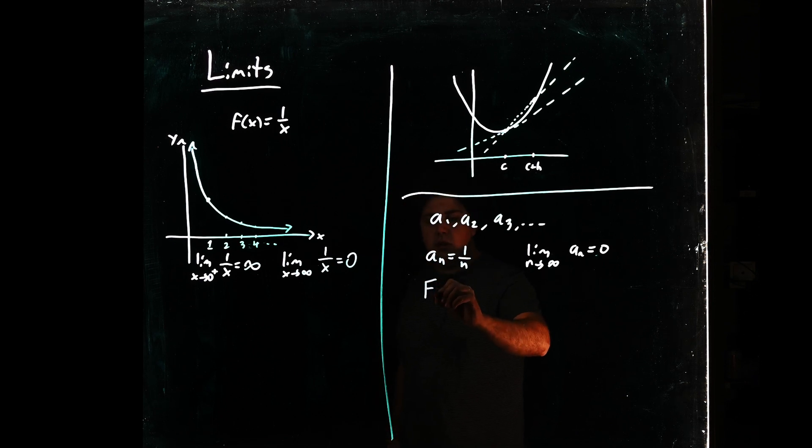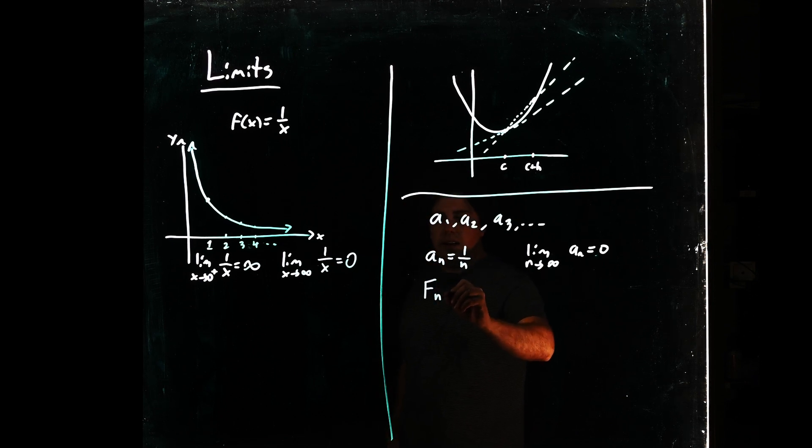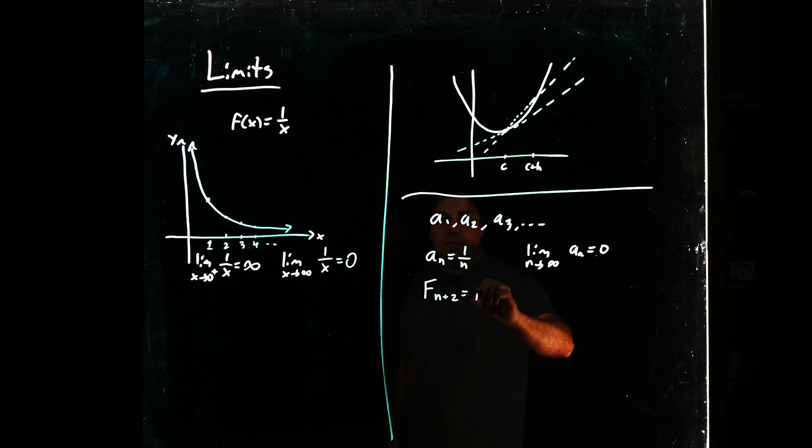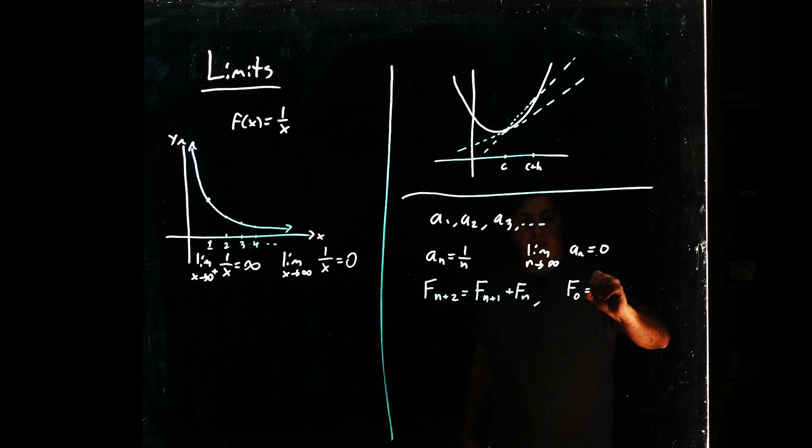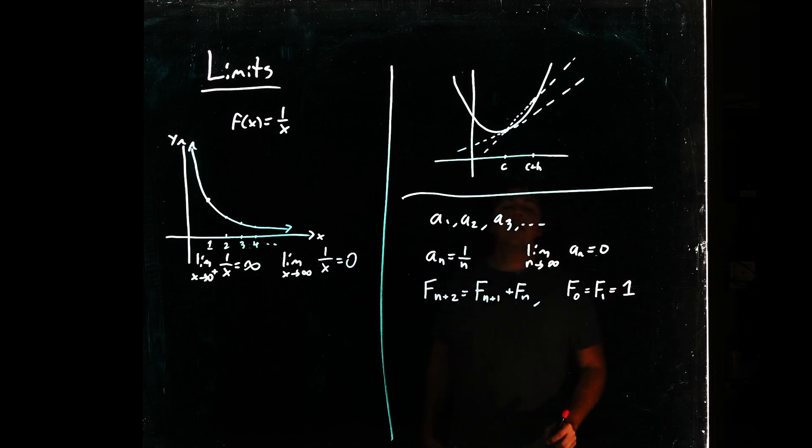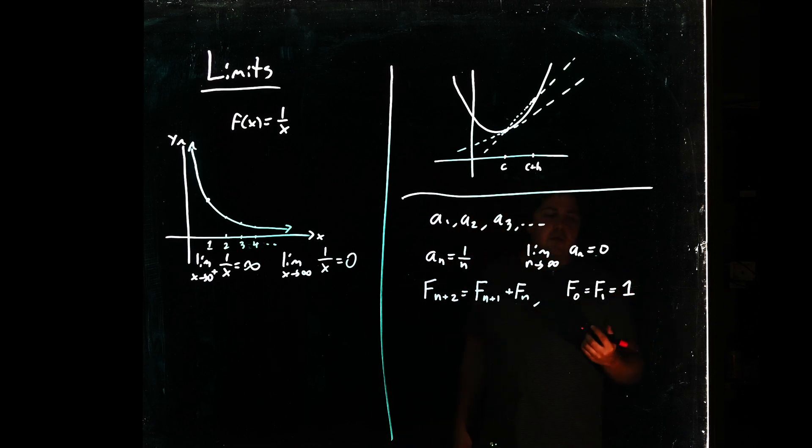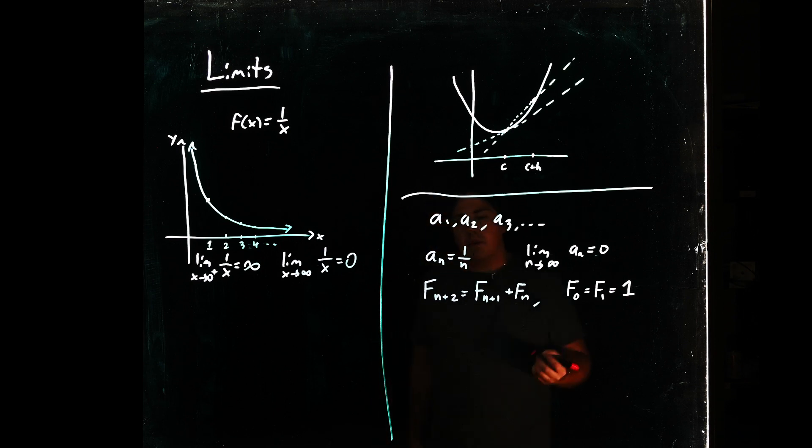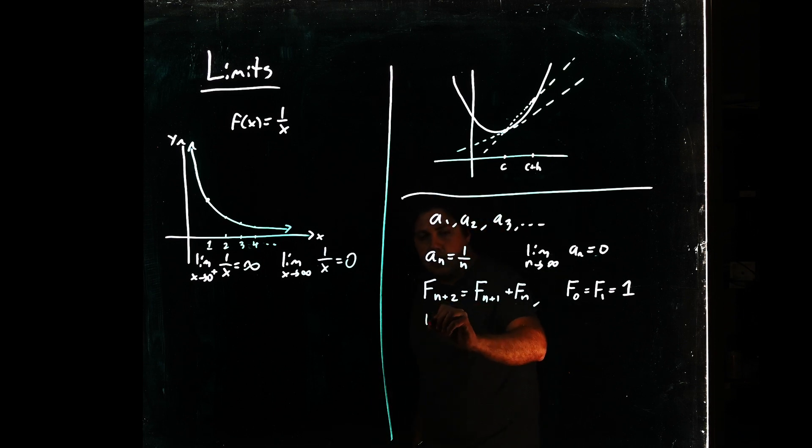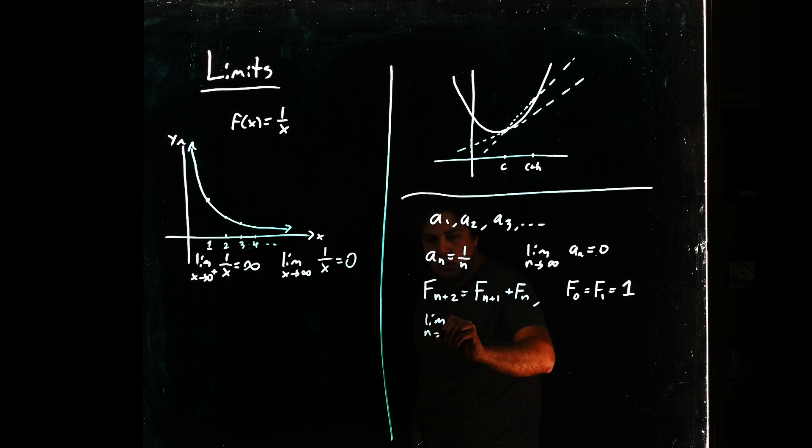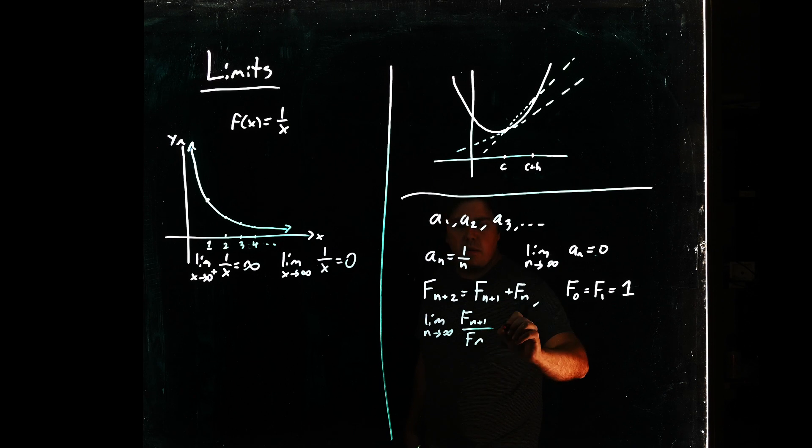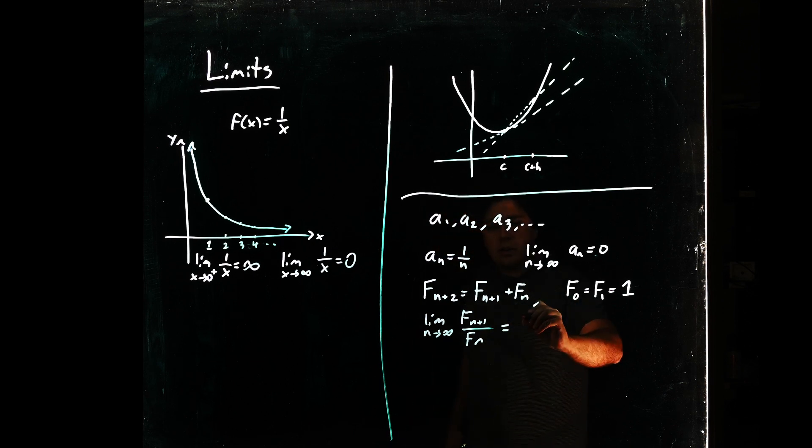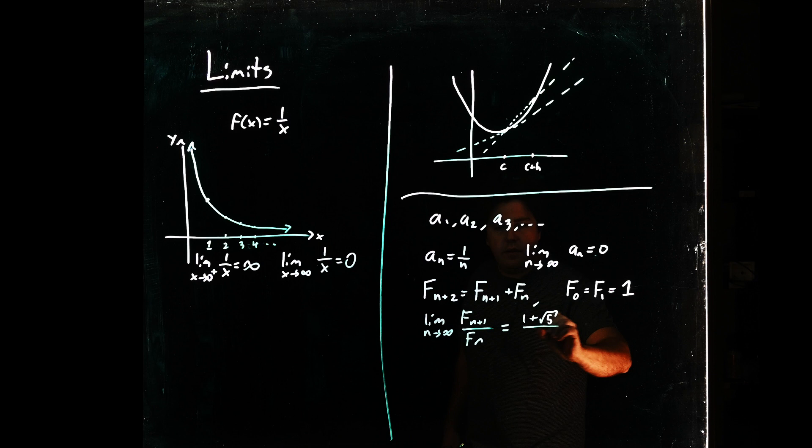You might have heard of the Fibonacci sequence, defined in the sense that f of n plus 2 is equal to f of n plus 1 plus f of n, where we start off with f of 0 is equal to f of 1 is equal to 1. And we can get the Fibonacci numbers from this. A fun limit that we like to be able to compute is the fact that, as it turns out, the limit of the ratios of these guys—so the limit as n goes to infinity of the n plus first divided by the nth Fibonacci number—is actually what's called the golden ratio, 1 plus root 5 over 2.